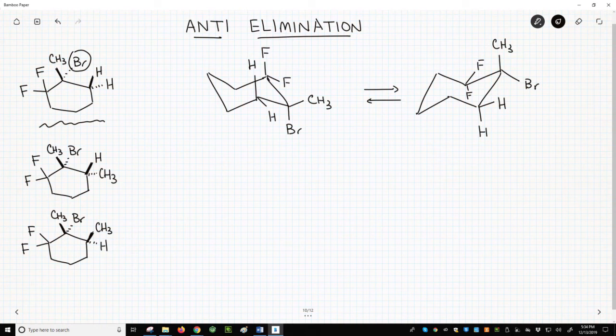The restriction for a beta-hydrogen and the leaving group is that they should ideally be anti to each other for an E2 reaction. In other words, the dihedral angle between the halide and beta-hydrogen should be 180 degrees.